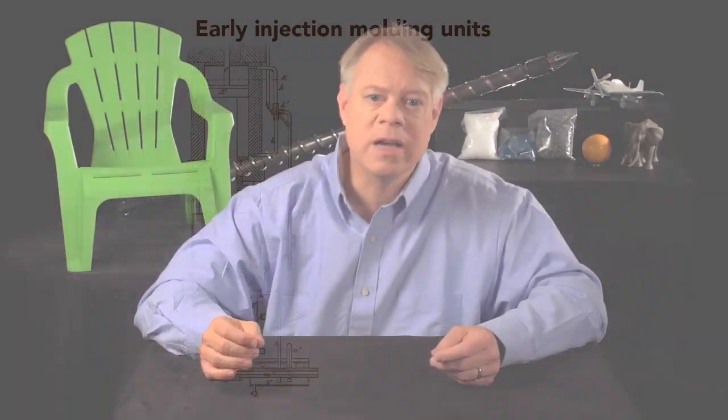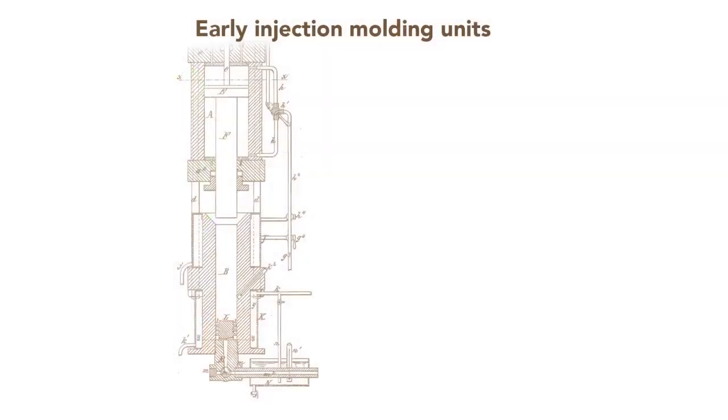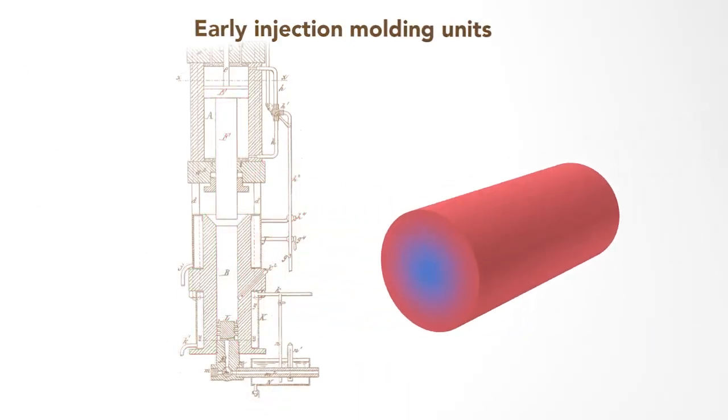Before the mid-20th century, injection molding machines used only external heating of the barrel to melt the plastic before a plunger injected the molten material. But because plastic conducts heat poorly, the temperature was uneven in the barrel. Either the middle was too cool and not fully melted, or the outer regions were too hot and degraded the plastic.